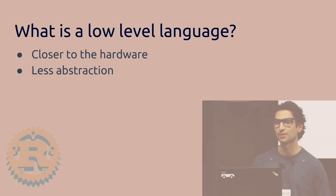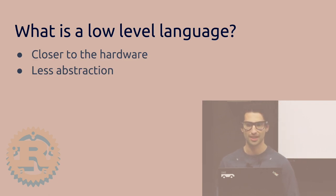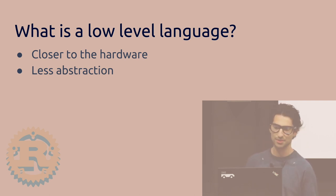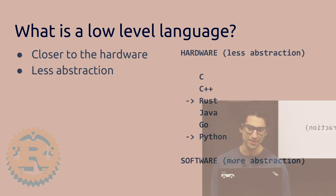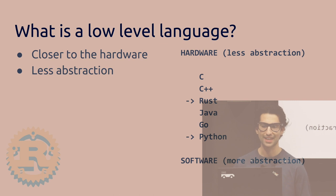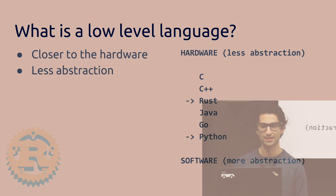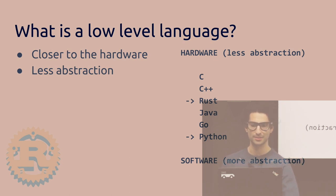What is a low-level language? A low-level language is a programming language that's close to the hardware and has less abstraction. Here's a diagram — I would put Rust in between C++ and Java, because it doesn't have a garbage collector, but it has some higher-level features than C++.